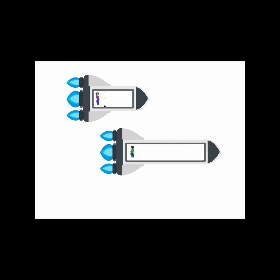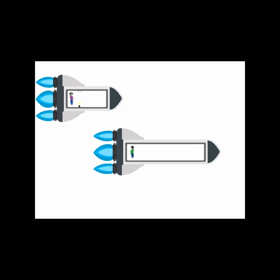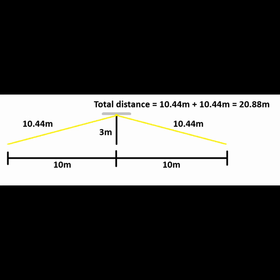However, now the space separation is 20 meters. The total length of time needed for light to traverse this path is 20.88 meters of time.